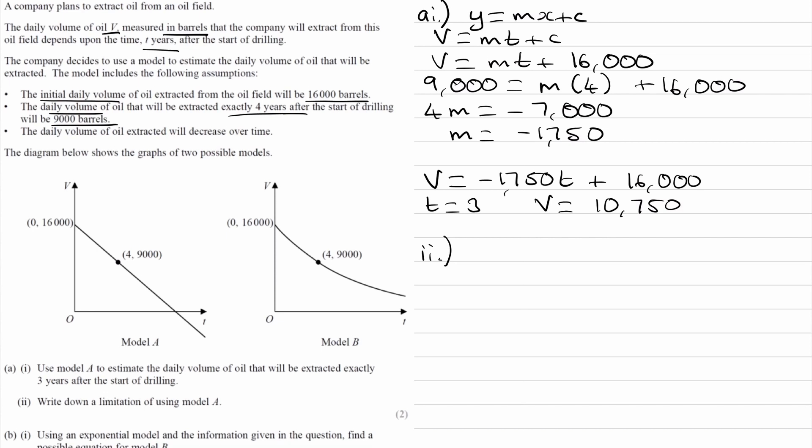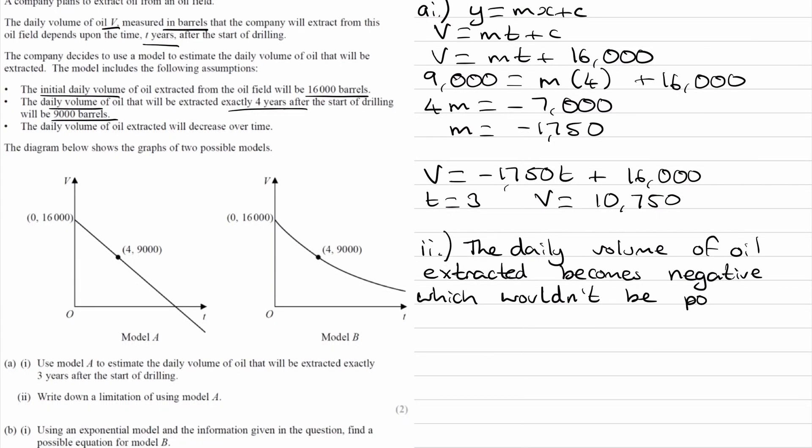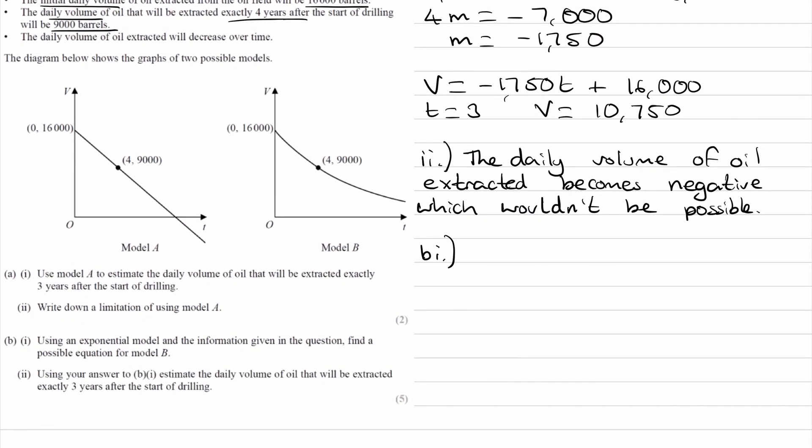For B part one, using an exponential model and the information given in the question, find a possible equation for Model B. Exponential means we have to have some constant to the power of a variable, which in this case would be t. So the volume would be equal to something of that form. We could say V equals a times k to the power of t, where a and k are both constants.